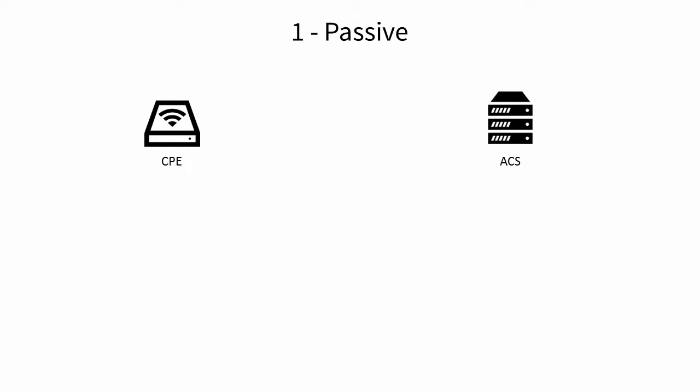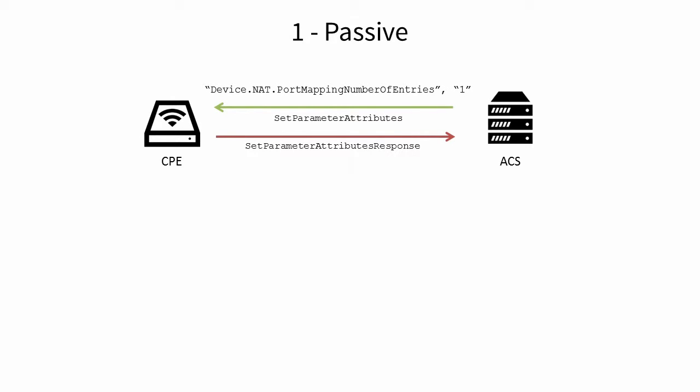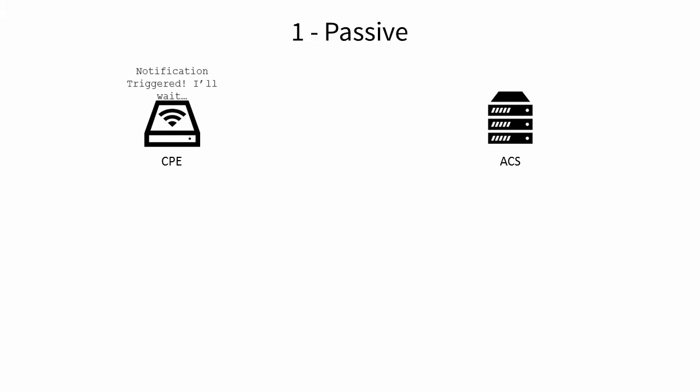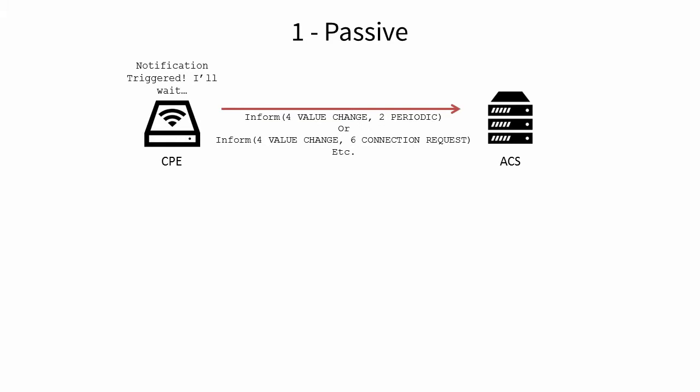Setting a parameter for passive notification means that, should the value of the parameter change, the CPE must include the 4 VALUE CHANGE event and the changed parameter value in its next Inform RPC to the ACS. It doesn't initiate a connection right away, but delivers the notification at the next most convenient time — for example, during a periodic inform or after a connection request. Setting passive notification can never be rejected on any parameter. However, it may be ignored for parameters that are set for forced inform or forced active notification.